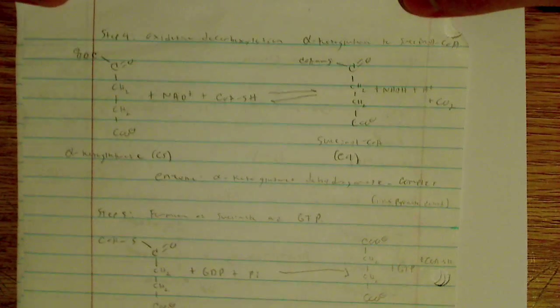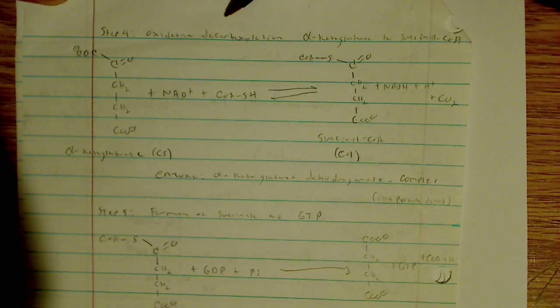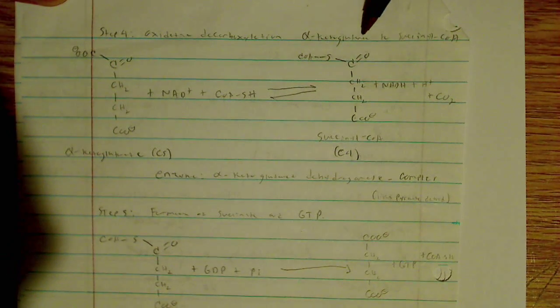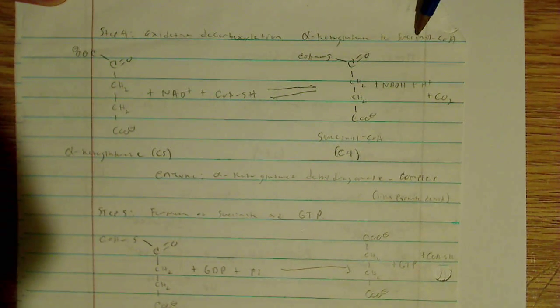Now I'll flip to the next part of my page here. So here is the rest of the cycle, starting up here with step four, which is the other oxidative decarboxylation where alpha-ketoglutarate is forming succinyl-CoA.